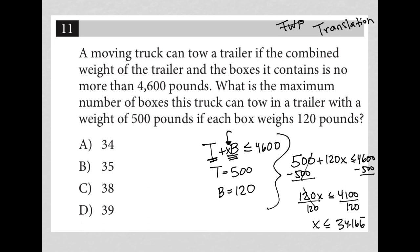Which means that because we can't have decimal boxes, the largest value that the number of boxes you can have is 34. So that's the maximum. As for what is the maximum number of boxes, we can have a total of 34 boxes and still stay within our weight limitations. So answer choice A is correct.